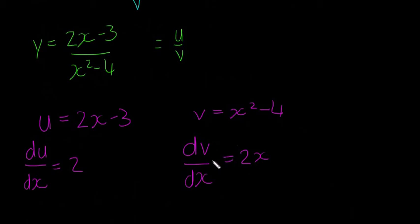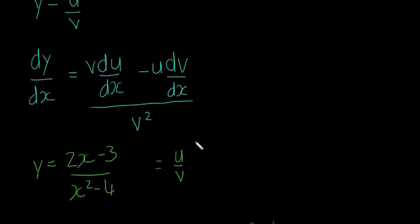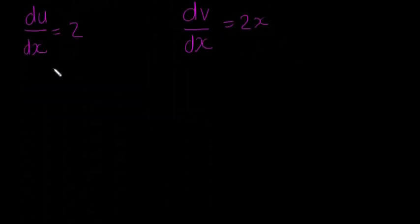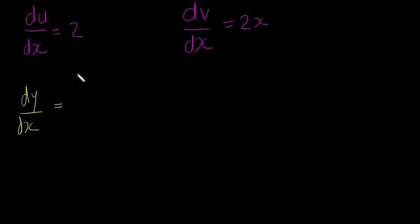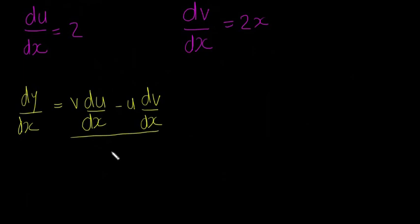So now we have our differentiations done, so now we can just stick these straight into our formula. So we're going to say that dy/dx equals v du/dx minus u dv/dx, all divided by v squared.